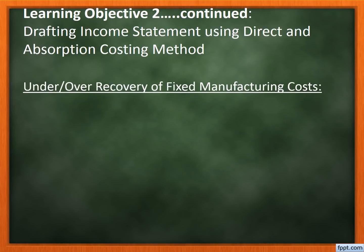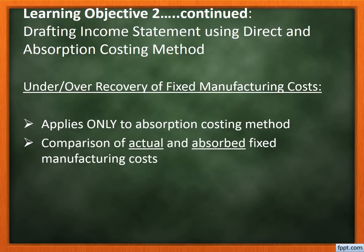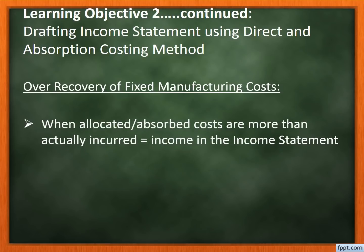The under or over recovery of fixed manufacturing costs applies only to the absorption costing method. The basic premise of this principle is to compare the actual fixed manufacturing cost to the absorbed fixed manufacturing cost. Since a predetermined absorption rate used to allocate the fixed manufacturing cost to units is based on budgeted figures, an over or under absorption occurs.